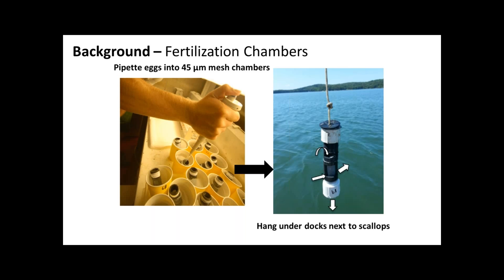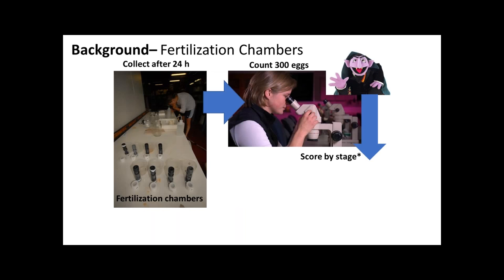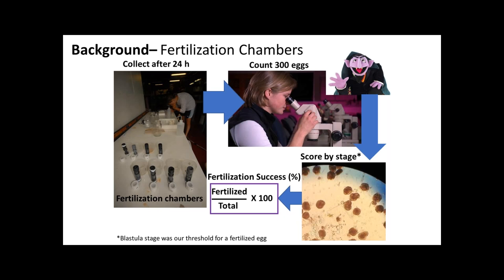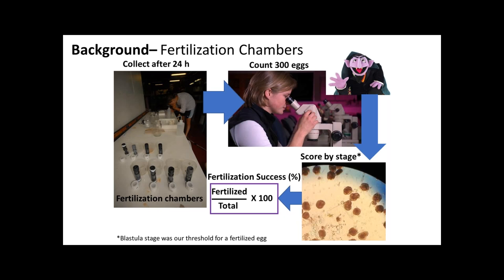We hang these next to populations either naturally spawning or under docks where we've isolated them in nets. Then we collect them after 24 hours, count all these eggs, score them by stage, and come up with a number. My point here is that this takes a lot of time, a lot of work, and people don't appreciate how much it takes just to get some numbers that you hope are kind of accurate. So what we did to look at naturally spawning populations is put these chambers on blocks, set up these populations using scuba divers.